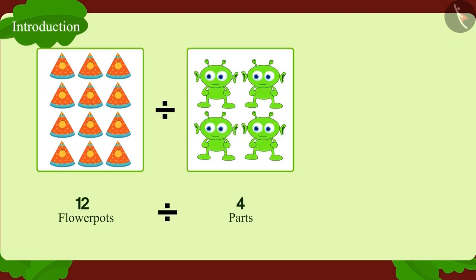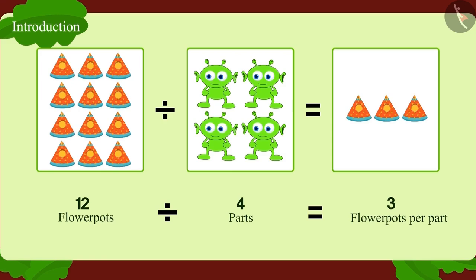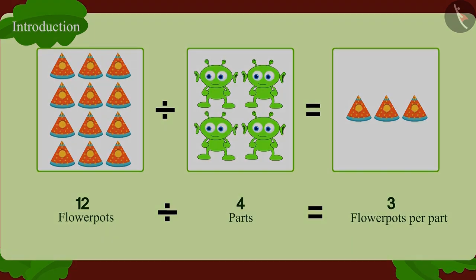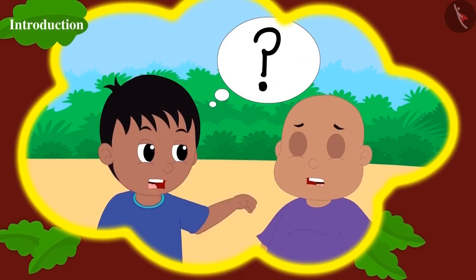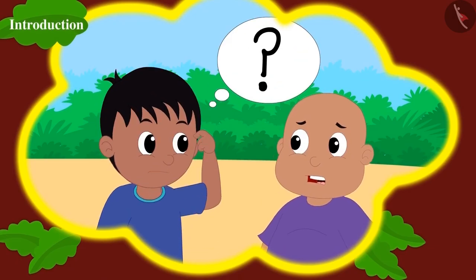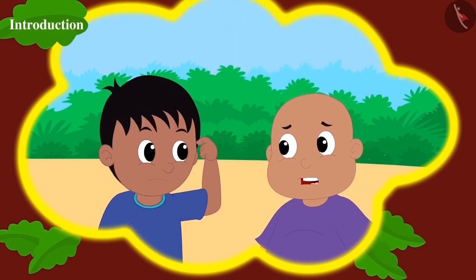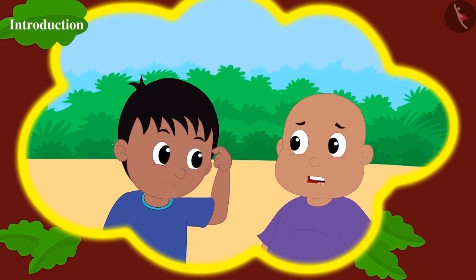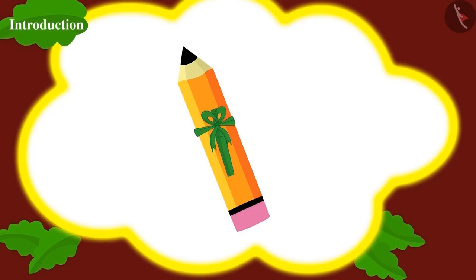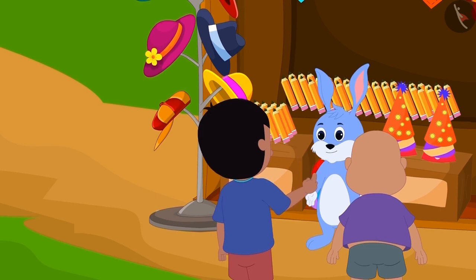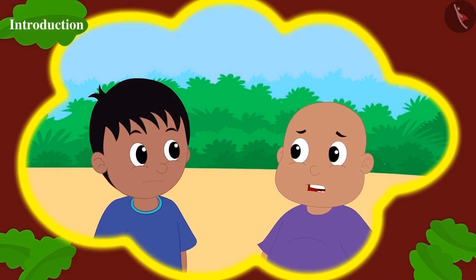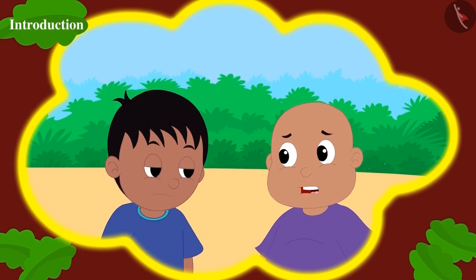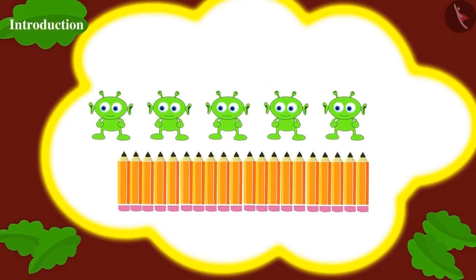12 flower pots divided into four equal parts is three flower pots in each part. Raju and Bablu are planning to buy pencils as gifts for Jeev's friends. They bought 20 pencils from Bunny's shop.